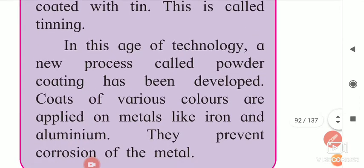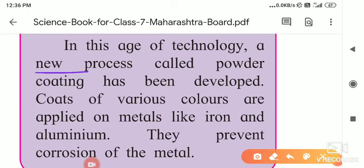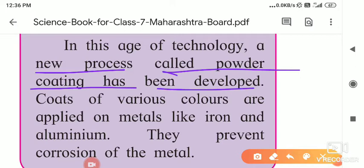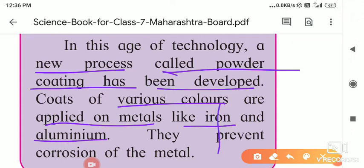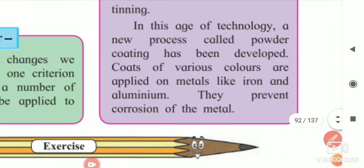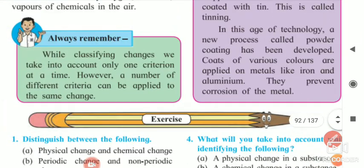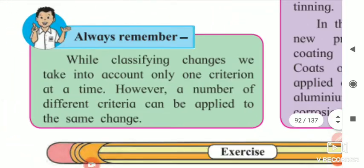In this age of technology, a new process called powder coating has been developed. Coats of various colours are applied on metals like iron or aluminium. You see that non-stick wares have different colours — red, black — these are examples of powder coating. These processes prevent corrosion of metals so the metals do not get corroded.